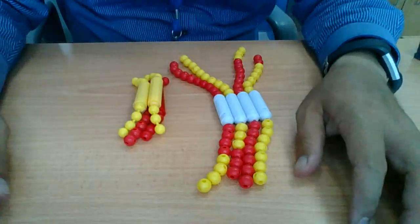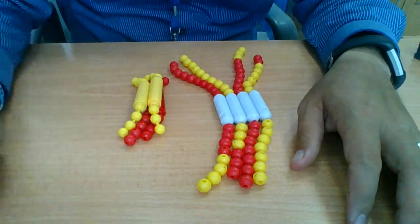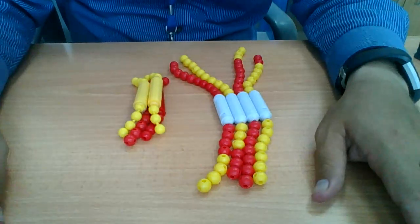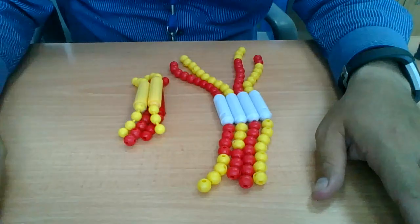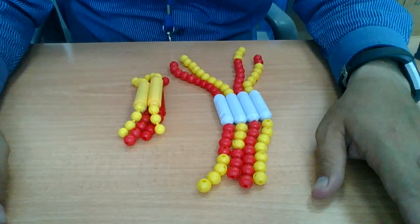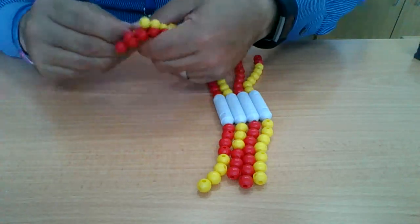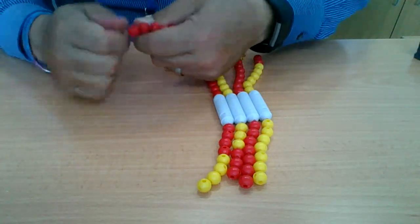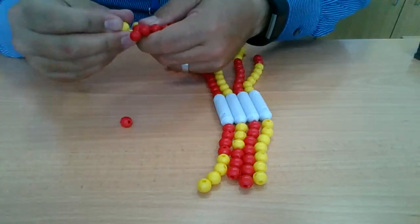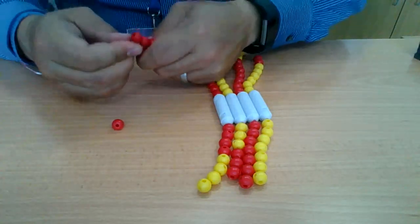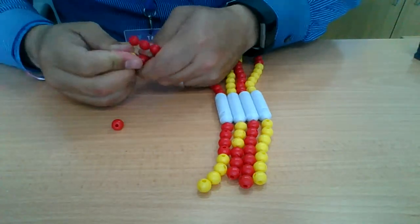Crossing over happens between every homologous pair of chromosomes. It can happen multiple times. So that one's been crossed. Now we're going to cross this guy or gal.